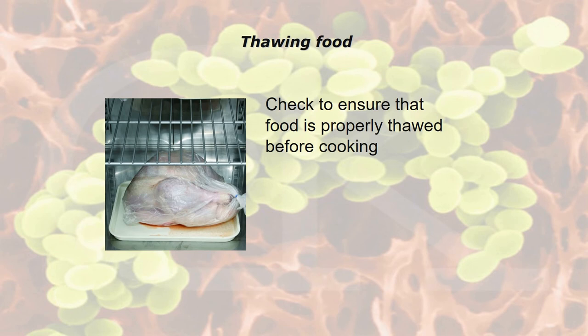When thawing food, ensure it is properly thawed before cooking. Check that chicken joints are pliable and that there is no ice in the cavity. The best way to ensure food is properly thawed is with a temperature probe. Always sanitize the probe itself before use — boiling water is a good environmentally friendly sanitizer. Insert it into the chicken in several parts including the cavity, and as long as there are no minus signs on the reading, you're ready to go.